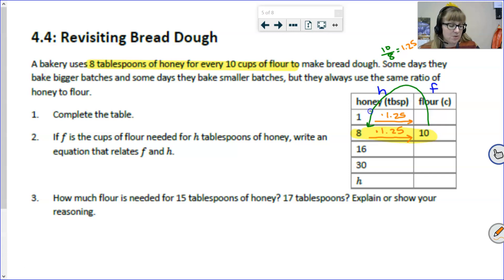So, 1 times 1.25 is going to be 1.25. And 16 times 1.25 is going to be 20. And 30 multiplied by 1.25 is going to be 37.5.